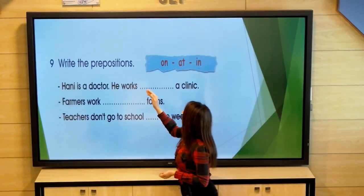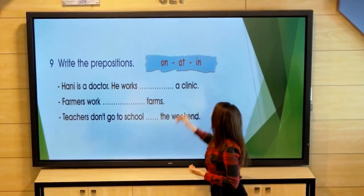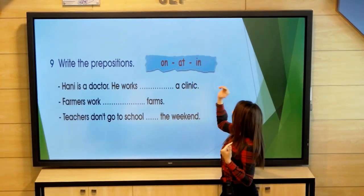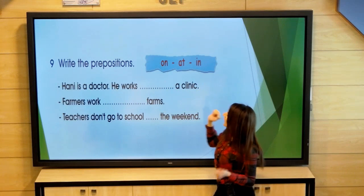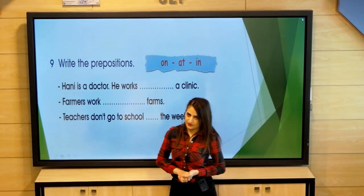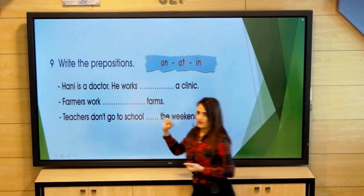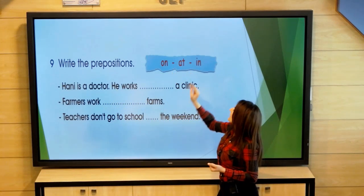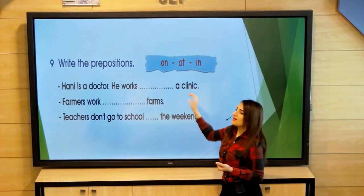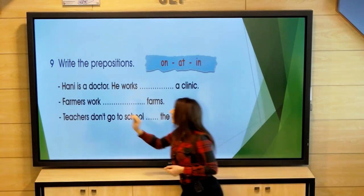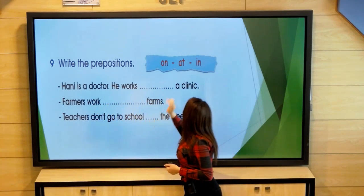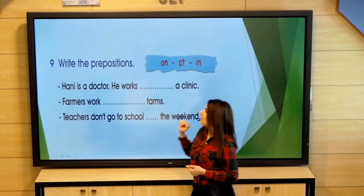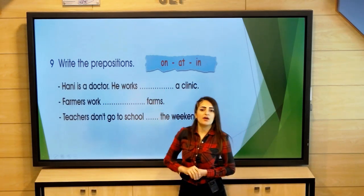Now, write the prepositions. We have three prepositions: on, at, and in. Mr. Haani is a doctor. He works — on a clinic, at a clinic, or in a clinic? Farmers work — on farms, at farms, or in farms?